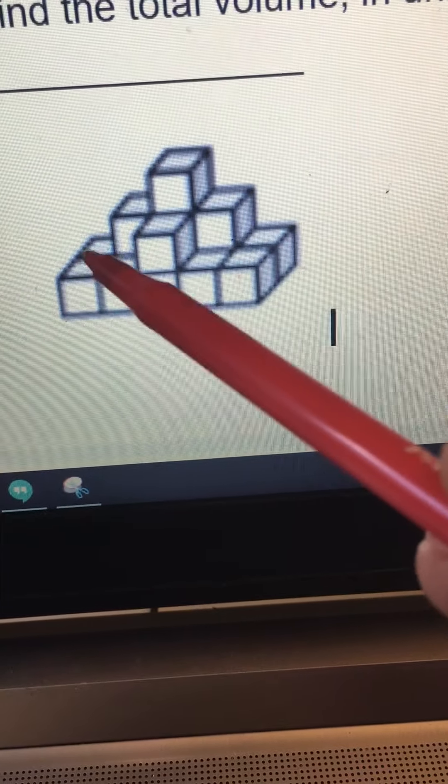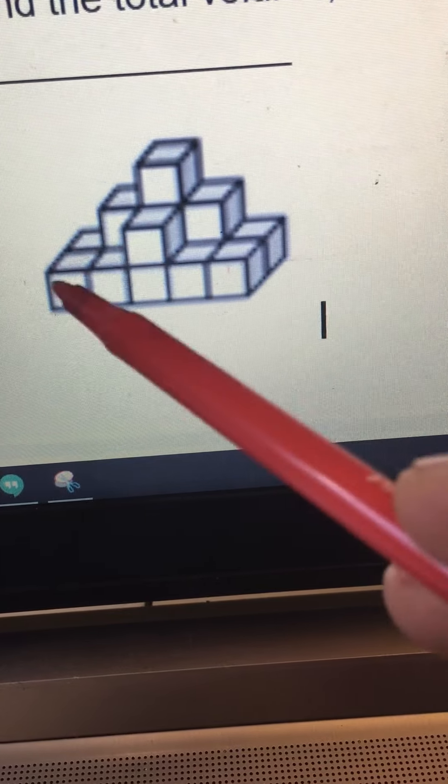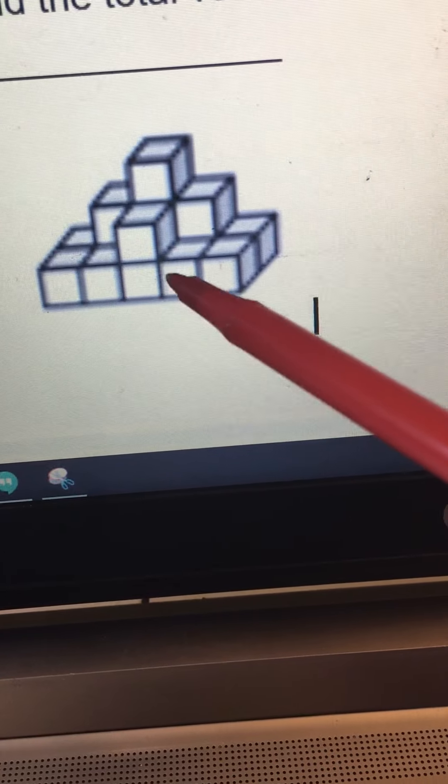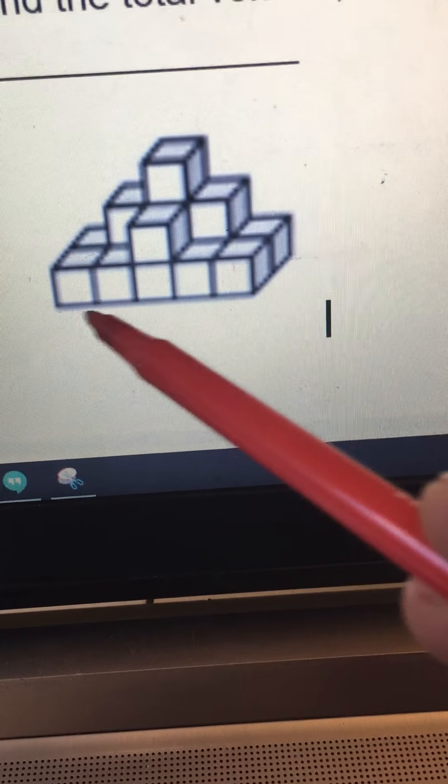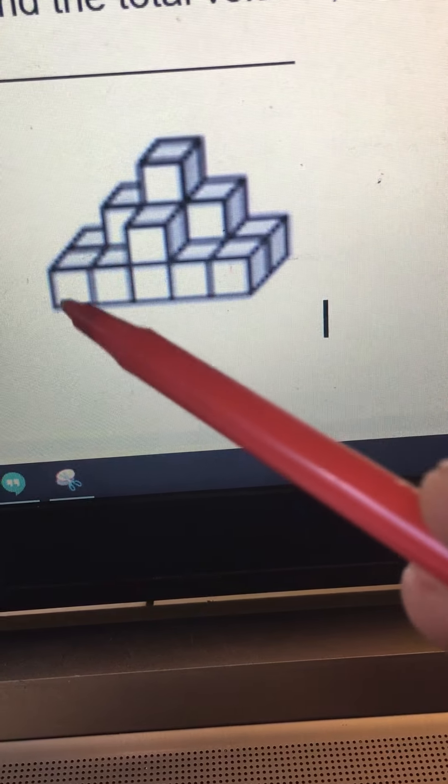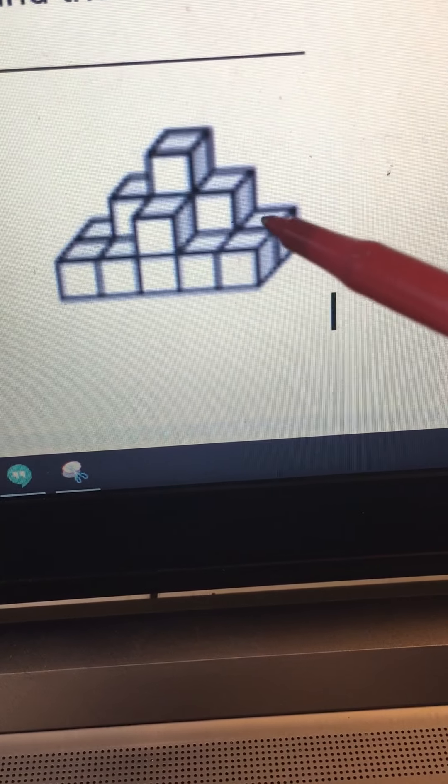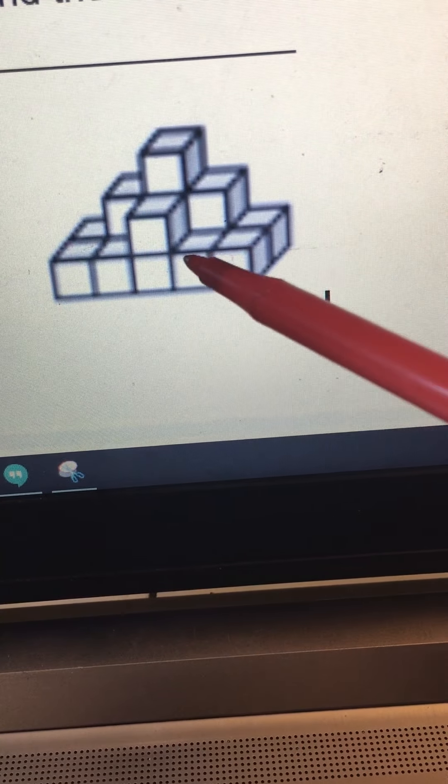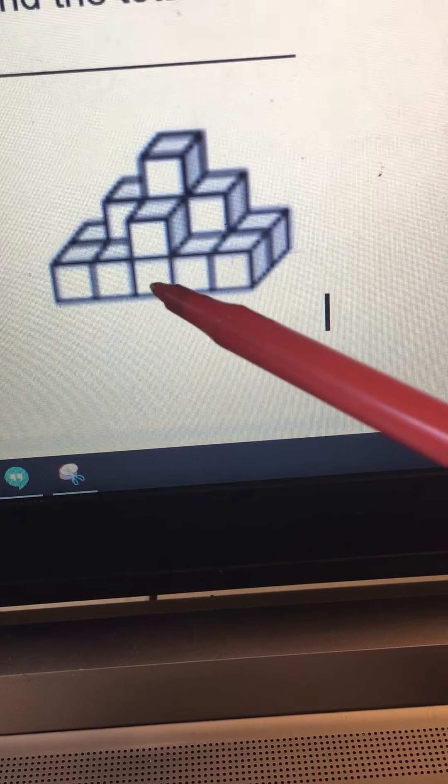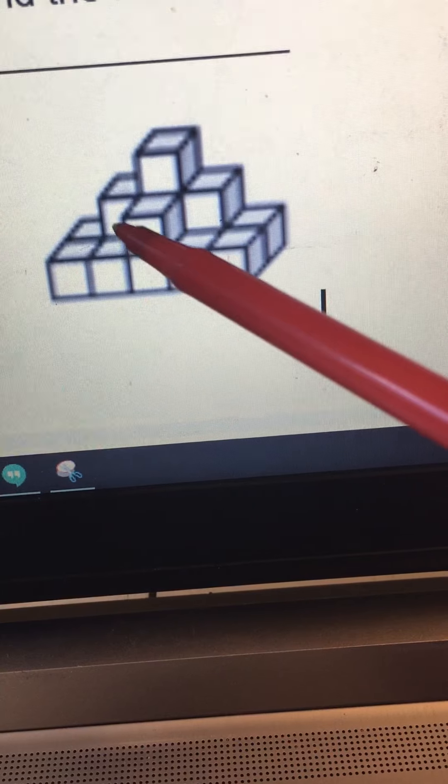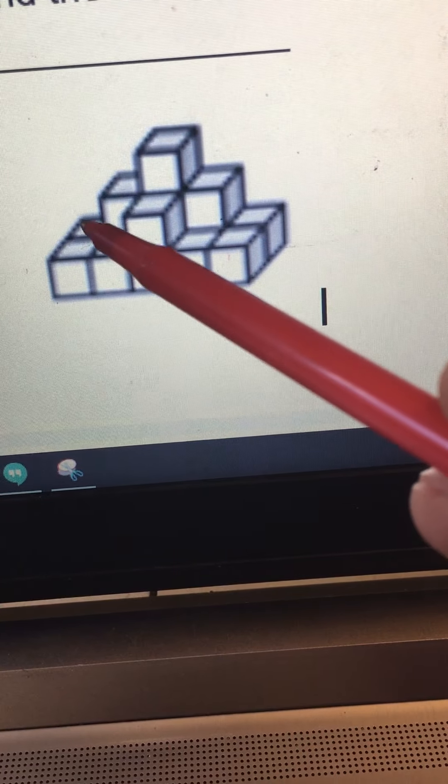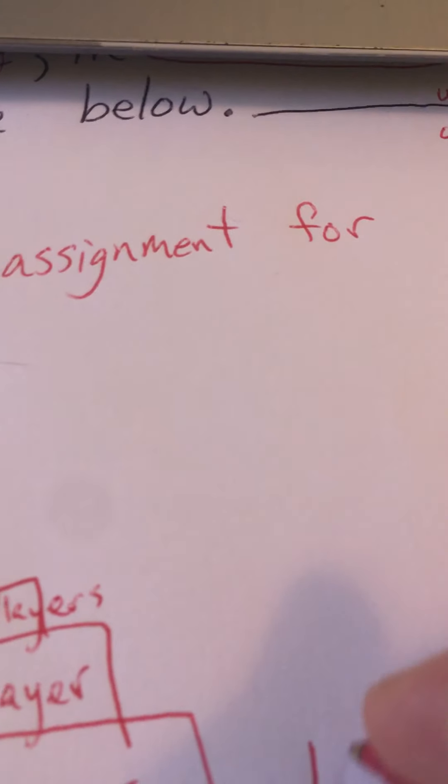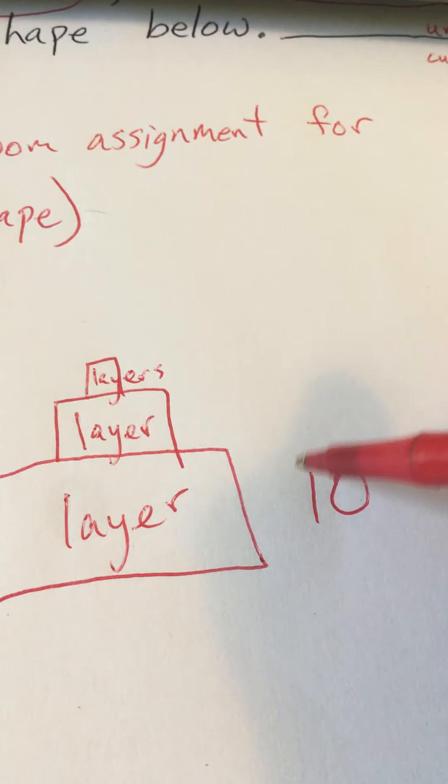So the bottom layer has two in the back times—so two times one, two, three, four, five. So if there's five going this way and two going that way, then the bottom is two times five. There are 10 on the bottom. One, two, three, there's one behind it. Four, five, there's one behind it. Six, that's holding up these ones. Seven, there's one behind it. Eight, nine, and ten. So the bottom layer has 10.